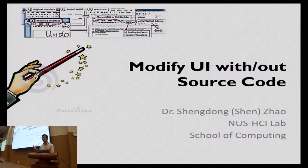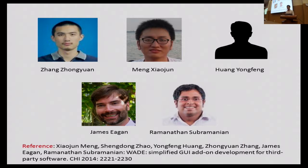Today I will talk about a piece of research done together with my students — about how you can modify interfaces with or without source code. Before that, I want to acknowledge the two heroes behind this work: Zhang Zhongyuan, Men Xiaojun, and Huang Yongfeng. Also two collaborators — James and Egan from France, and Ramen from Singapore. They are the true people behind making this happen. Xiaojun is actually outside — if you want to see a demo, you can go talk to him.